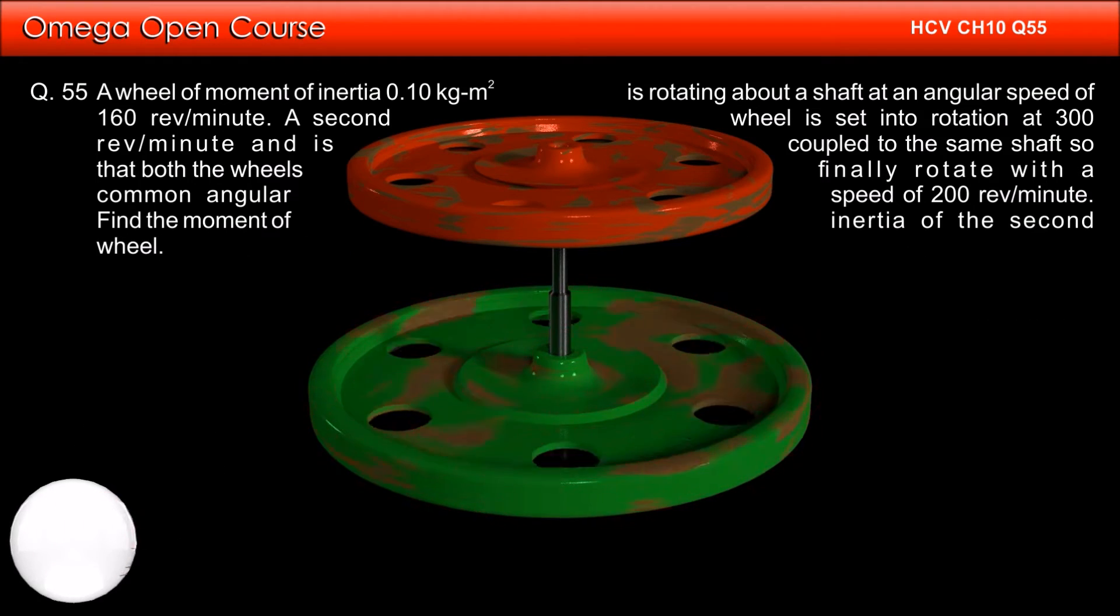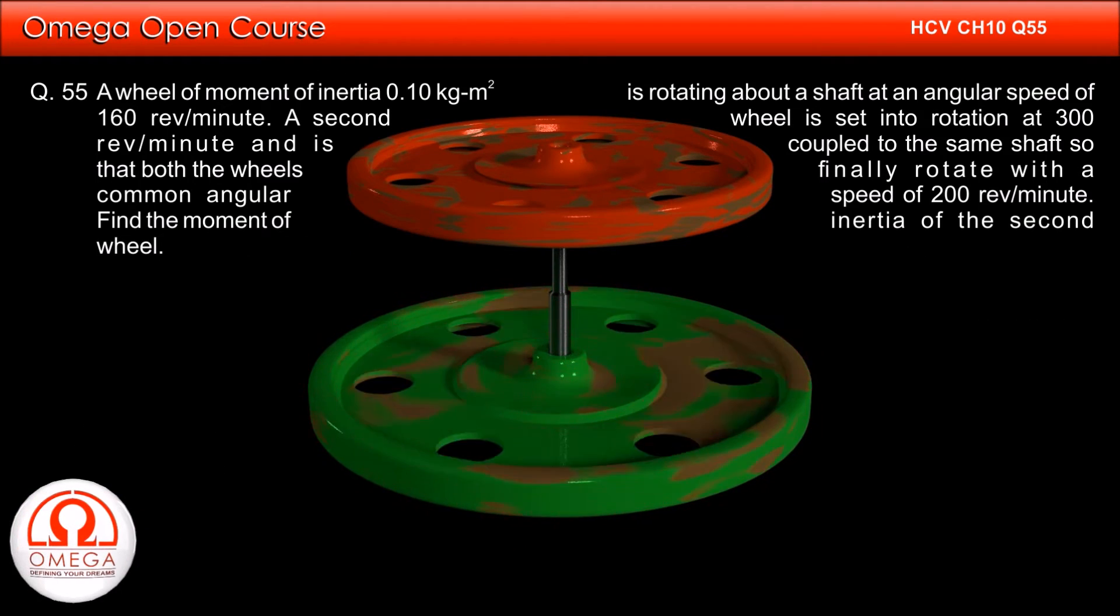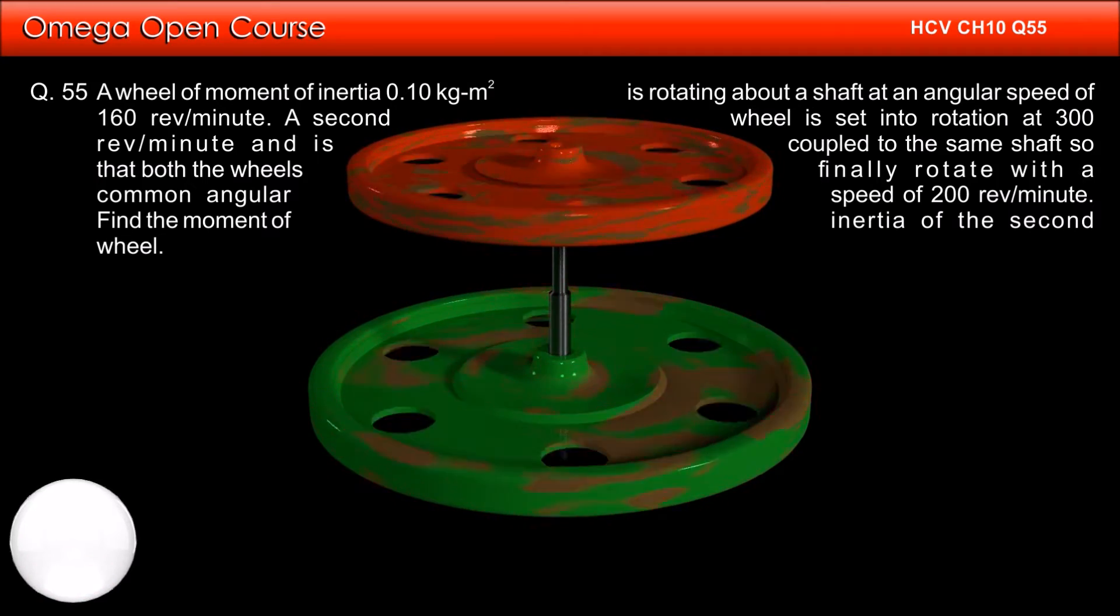A wheel of moment of inertia 0.1 kg meter square is rotating about a shaft at an angular speed of 160 rpm.